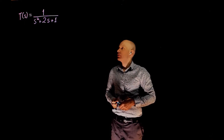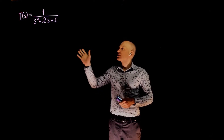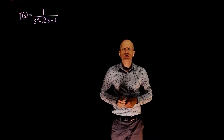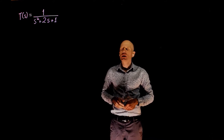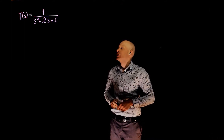In this first example of Routh-Hurwitz stability criterion, we have a simple second-order transfer function and we want to evaluate if the system is stable or not.